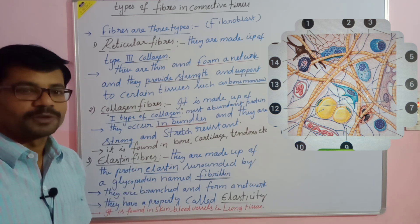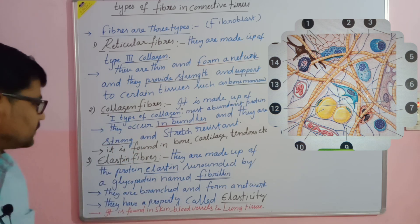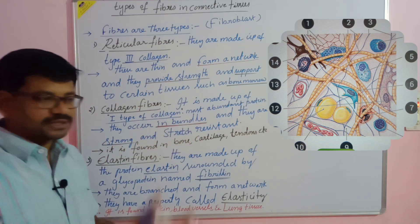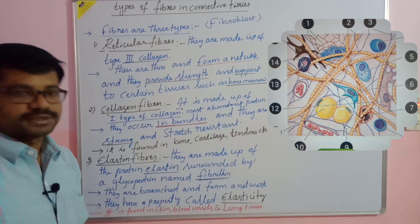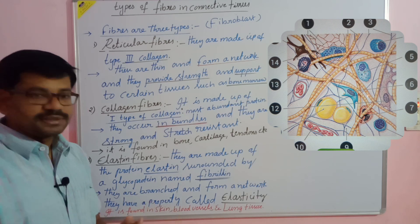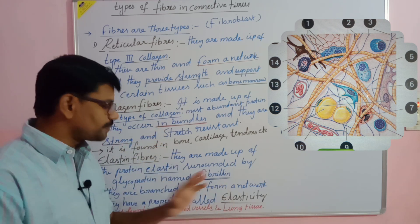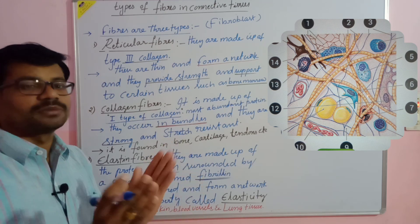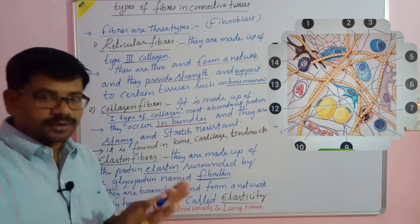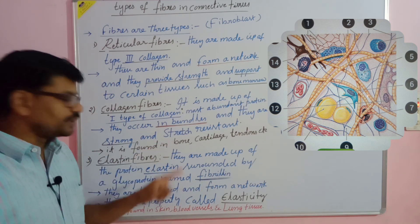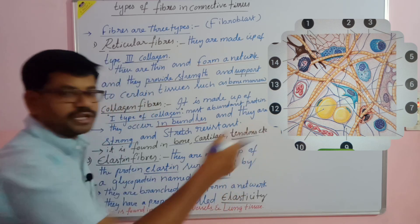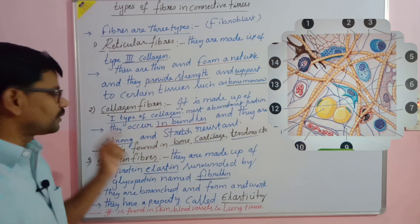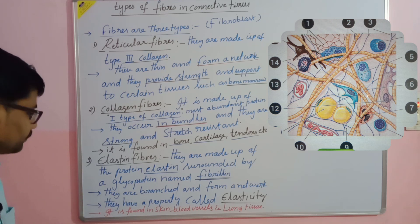Collagen fibers are the most abundant protein in our body — 25% of proteins in our body are collagen proteins. They occur in a bundled form and are strong and stretch-resistant. Stretch-resistant means they are opposite to elastic — they cannot expand and cannot return to a normal state, meaning they always remain in bundled form. These are mostly found in bone, cartilage, tendons, and ligaments.